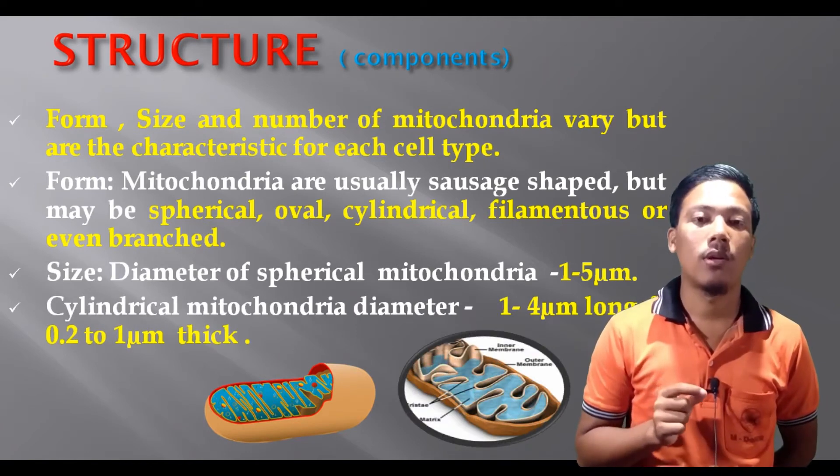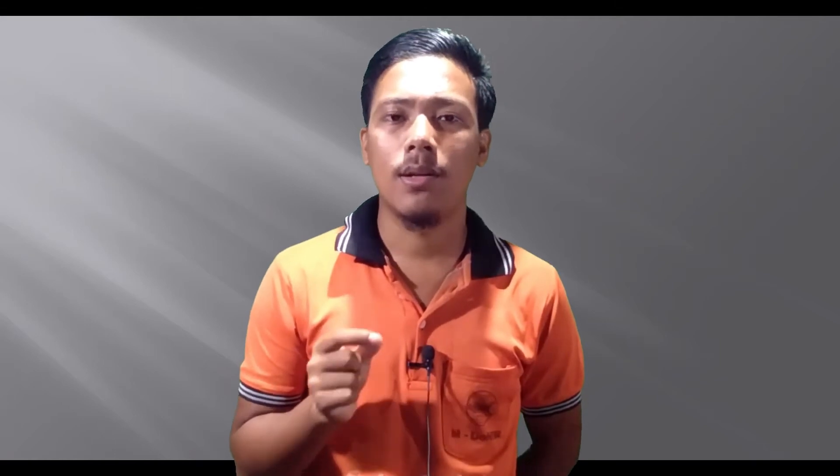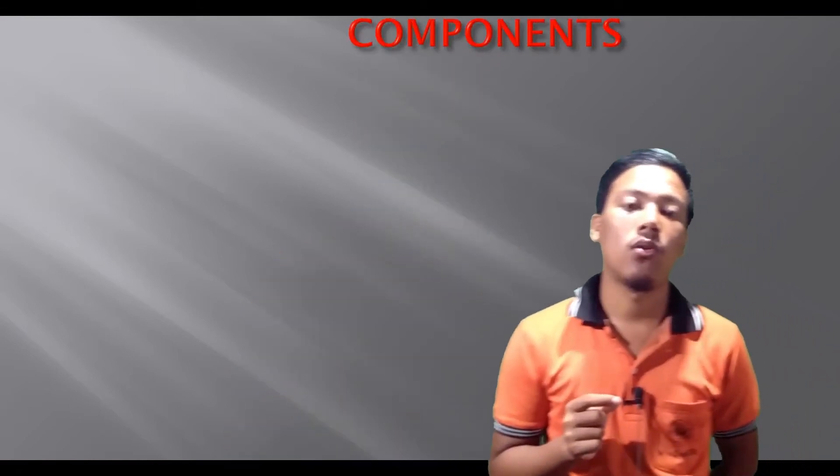The spherical mitochondria have a diameter of 1 to 5 micrometers. Cylindrical mitochondria have a length of 1 to 4 micrometers and thickness of 0.2 to 1 micrometer. Actively synthesizing, growing, and dividing cells have more number of mitochondria than other cells — probably up to 1000 mitochondria.